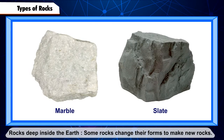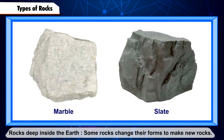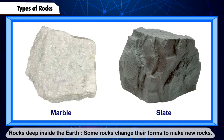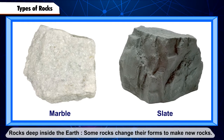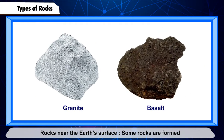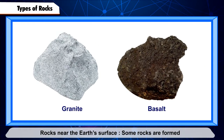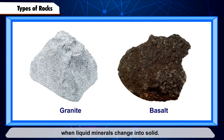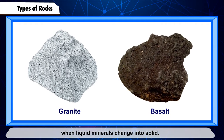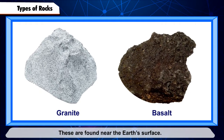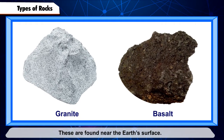Rocks deep inside the earth: some rocks change their forms to make new rocks. Rocks near the earth's surface: some rocks are formed when liquid minerals change into solid. These are found near the earth's surface.